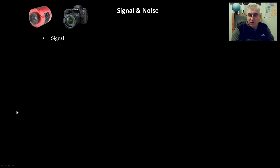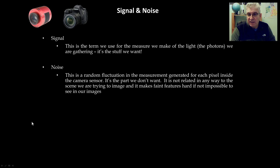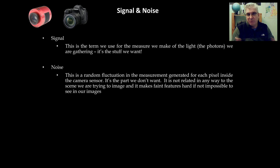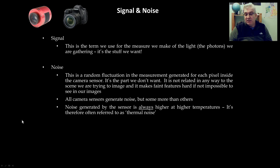We'll start with the terms signal and noise. Signal is the term we use for the measure we make of the actual light — the photons we're gathering, the stuff we want. Noise is a random fluctuation in the measurement generated for each pixel by the sensor itself, and we certainly don't want it. All camera sensors generate noise, and noise generated by the sensor is always higher at higher temperatures, so it's often referred to as thermal noise.